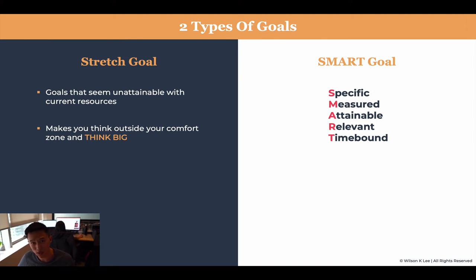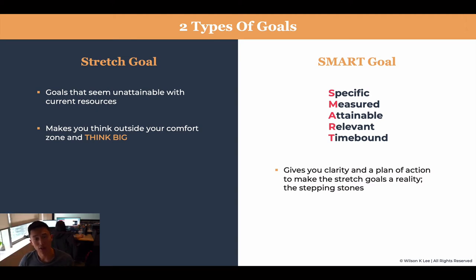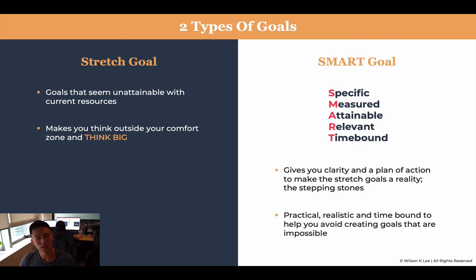A SMART goal is something that is way more down to earth. It is specific, measurable, attainable, relevant, and timely. We need to make sure that all the goals we set as SMART goals adhere to these five rules, because if they don't, they are not smart — not something we can take action on to get closer to our stretch goals. It is practical, realistic, and time bound, and it helps you avoid creating goals that are basically impossible.